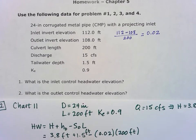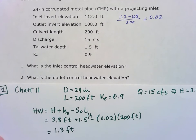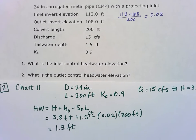And so that does give us a final answer of 1.3 feet for that headwater depth there. But in order to find the outlet control headwater elevation, we're going to have to add that to the inlet invert elevation.